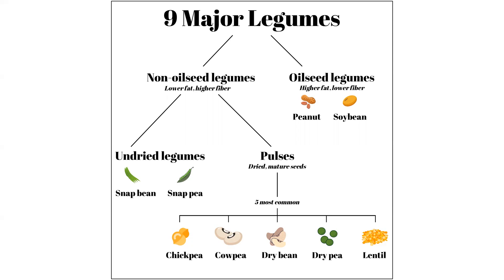Now looking at the non-oilseed legumes, we can see that these are lower in fat and also higher in fiber. This is the main division among legumes. These non-oilseed legumes can be further broken down — they can be called undried legumes, which is what people often think of as a fresh green vegetable, like a snap bean or a snap pea. And then they can be broken down into pulses.